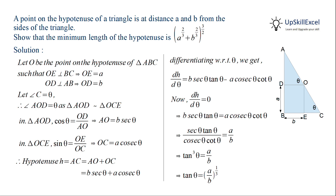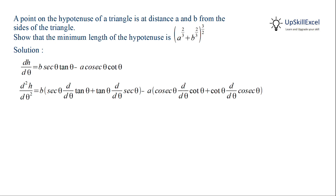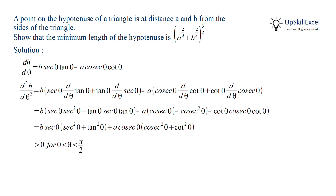This implies that tan theta is equal to A over B raised to the power 1 over 3. To verify that this is a minimum and not a maximum, we obtain the second derivative of H. Applying the product rule to both terms, and taking sec theta common in the first two terms and cosec theta common in the third and fourth terms, we get an expression with terms that are always positive in the domain 0 to pi over 2. Hence the second derivative of H is always greater than 0. Therefore, the hypotenuse is minimum at tan theta equal to A over B raised to 1 over 3.